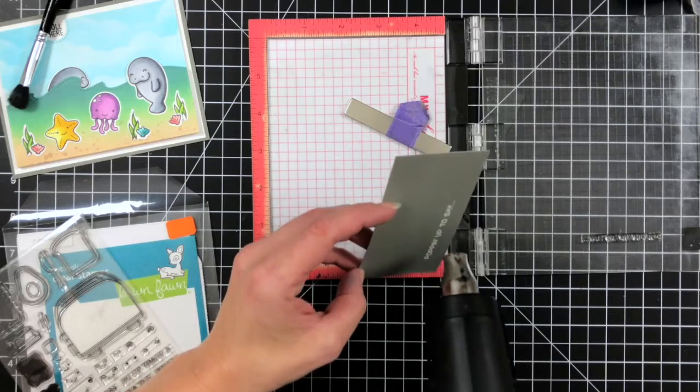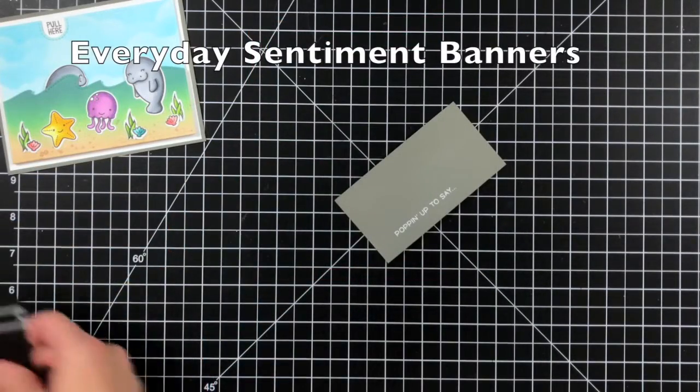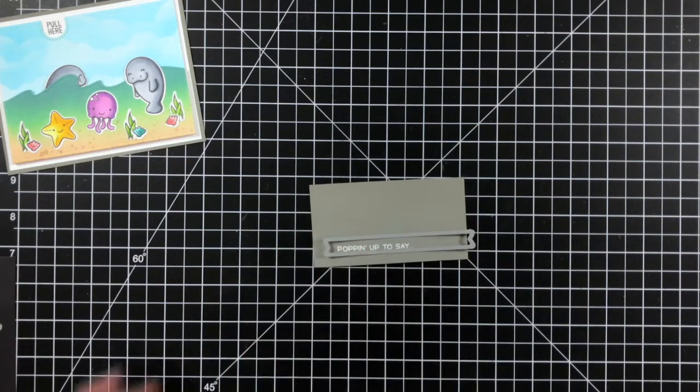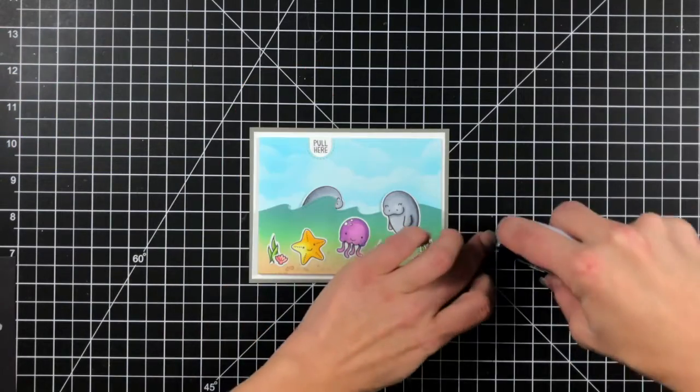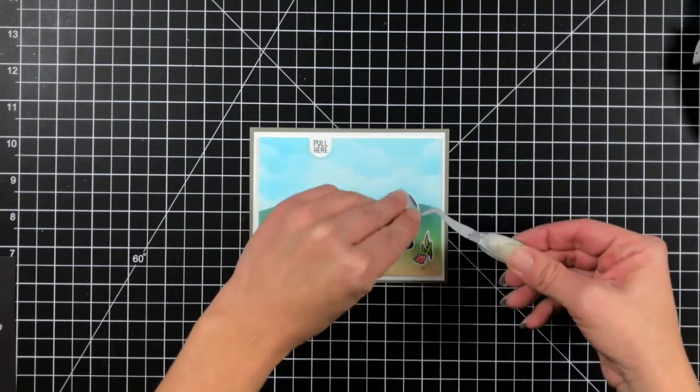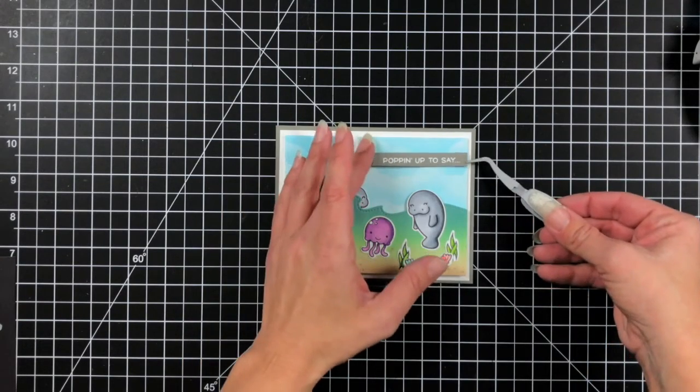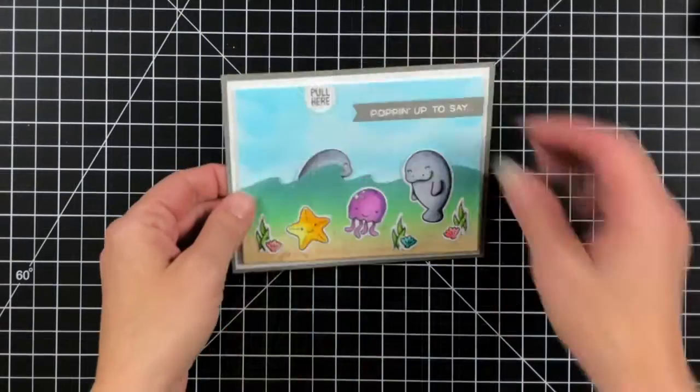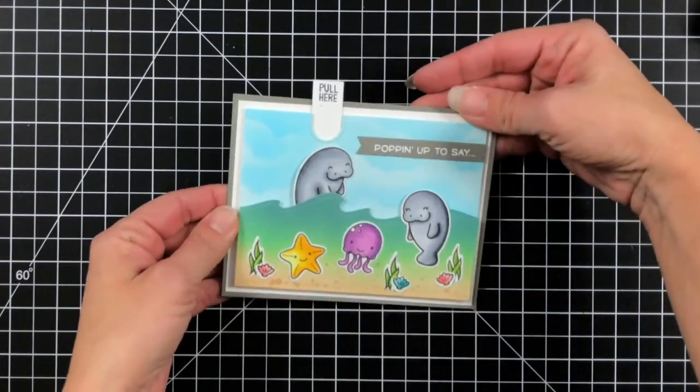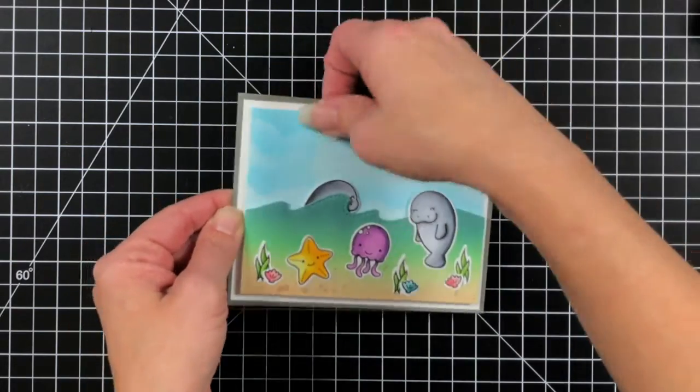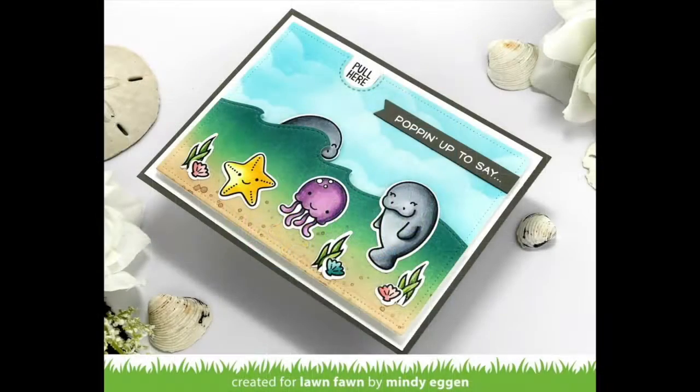And then I'll bring in one of my favorite go-to dies for sentiments, the everyday sentiments banner. And I'll just die cut that out. I don't need the whole thing so I did trim off the excess there on the right hand side. And I'm just going to attach that with some adhesive. And it does say popping up to say I love you or happy birthday or congratulations. Anything would be perfect to go with that stamp set.